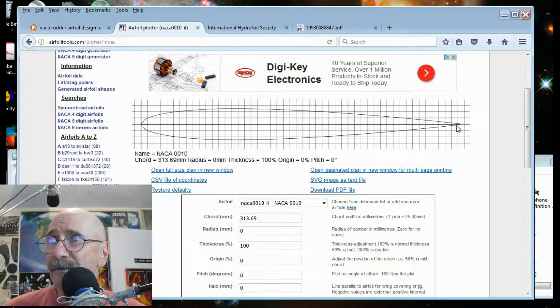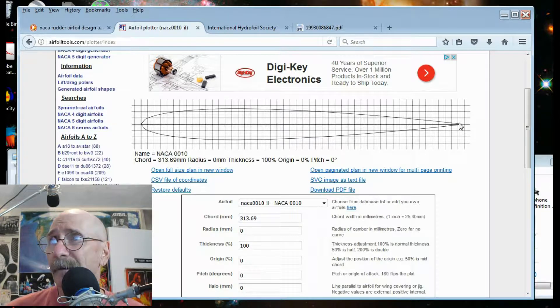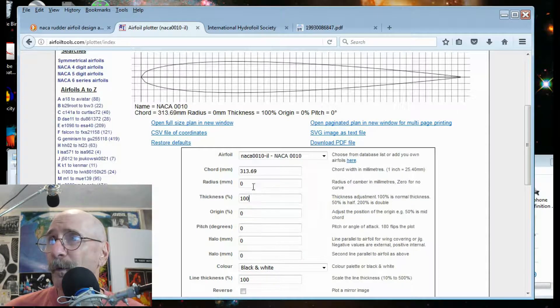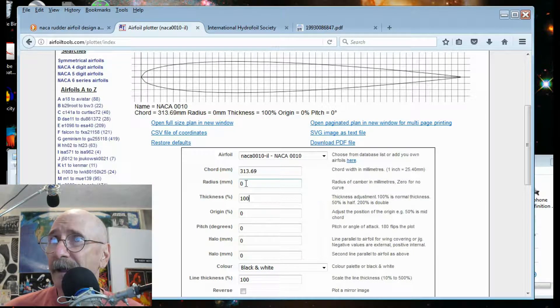And what this will do is it will give us a nice plot. If you count up these, you'll get 12 times 4, about 48, 49 and a quarter grid. And I plotted a 100% thickness, a 0010.